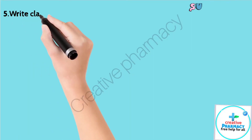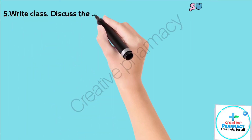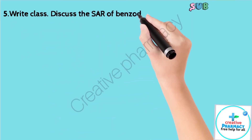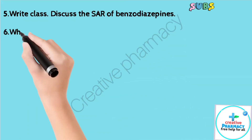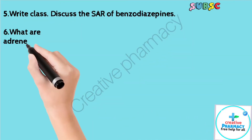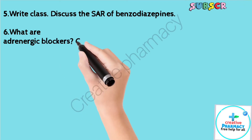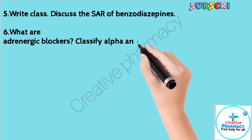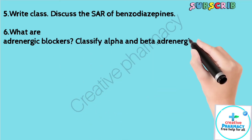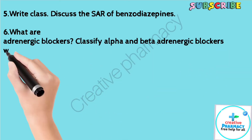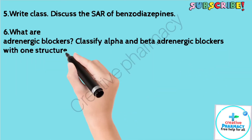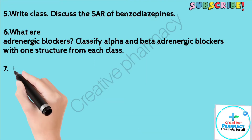Question 5: Discuss the SAR of benzodiazepines. Question 6: What are adrenergic blockers? Classify alpha and beta adrenergic blockers with one structure from each class.